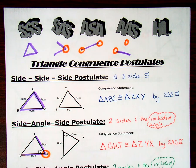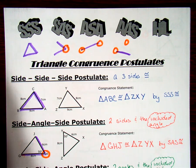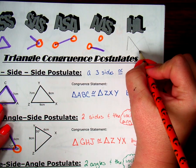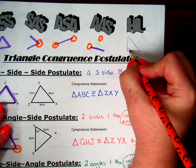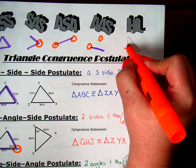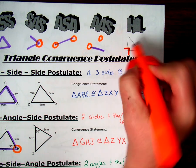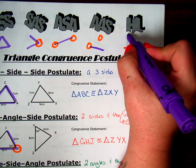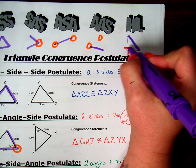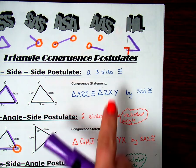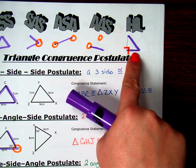And then in the last video, we attached hypotenuse-leg, which we said could only work in a right triangle. So when we have a right triangle, it has to be the right angle, it has to be the hypotenuse, and then one of the two legs. It doesn't matter which one. So it's a special case of angle-side-side.